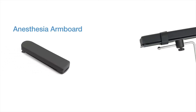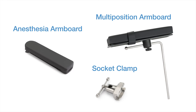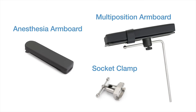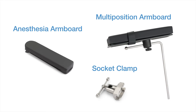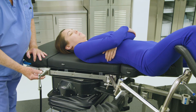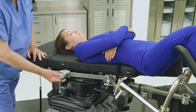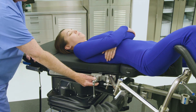The OT-1000 series table is equipped with both an anesthesia arm board to help position the arm on the non-operative side of the body and a multi-position arm board to help position the arm on the operative side, to ensure patient arms are properly positioned during the procedure. Before attaching an anesthesia arm board, first apply a socket clamp to the side rail on the non-operative side of the table.